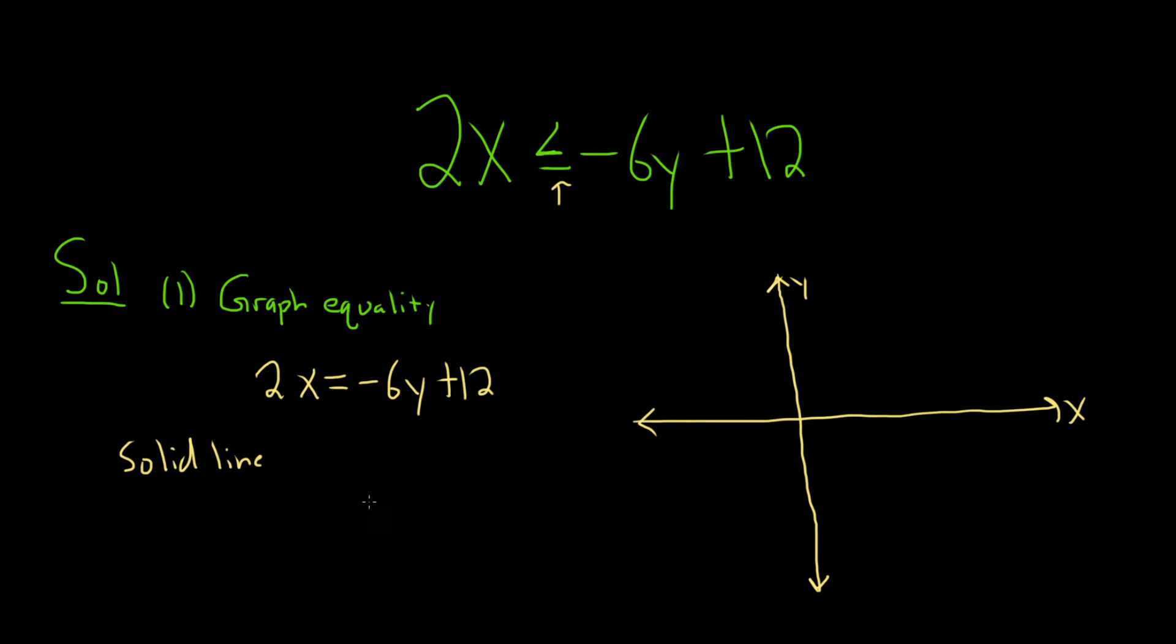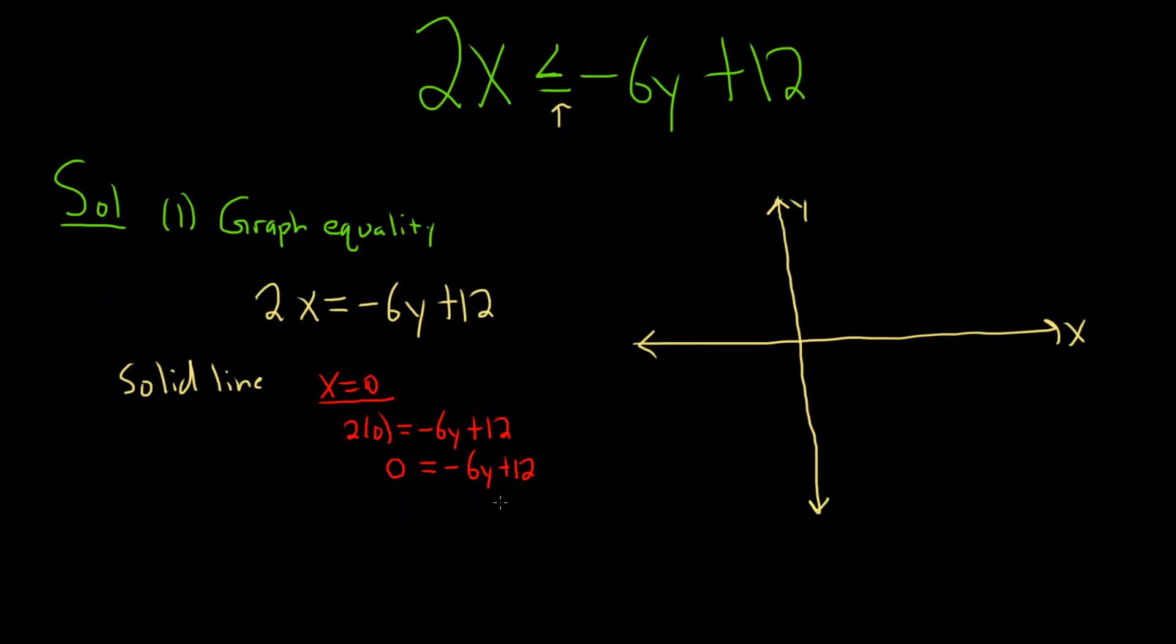To do that, we can just plug in 0 for x and plug in 0 for y. So if we set x equal to 0, we get 2 times 0 equals negative 6y plus 12. So 0 is equal to negative 6y plus 12. Then we can subtract 12 from both sides. So minus 12, minus 12.